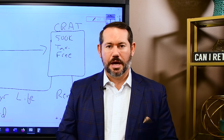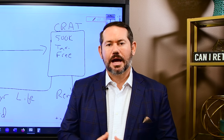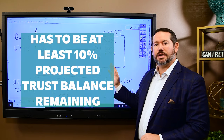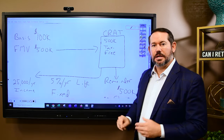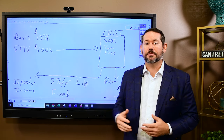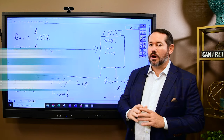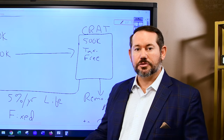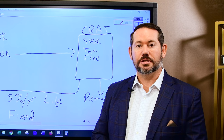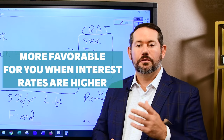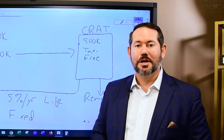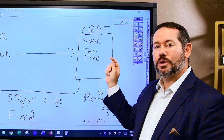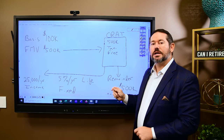You definitely want to talk to a qualified financial planner or CPA to understand the nuances. A few things to be aware of: the actuarial calculation requires at least 10% of the projected trust balance remaining for this to be a viable strategy. If during your life the trust balance actually drops to 5%, it's automatically going to be distributed to charity, your income will stop, and that's the end of the plan. This has not been a popular strategy over the past 15 years or so because the actuarial calculation that determines your income tax deduction today is more favorable when interest rates are higher. When interest rates are very low, the actuarial calculation doesn't work in your favor.